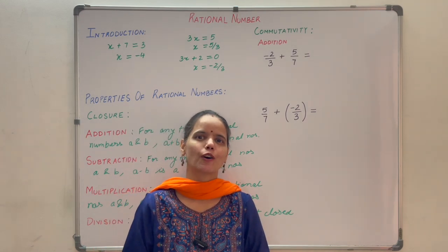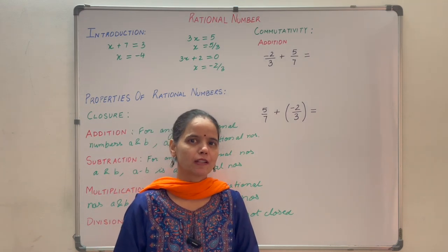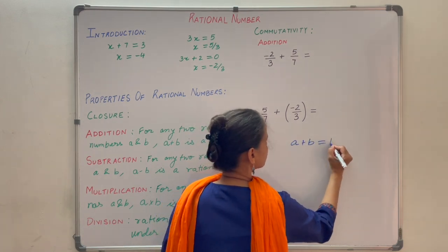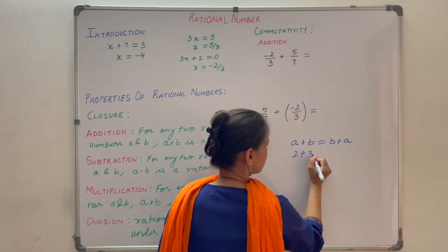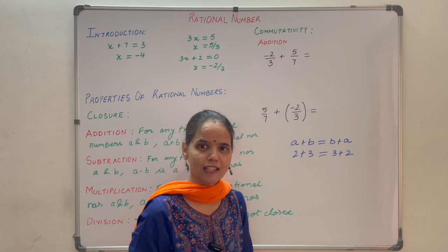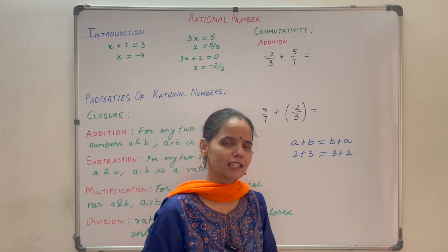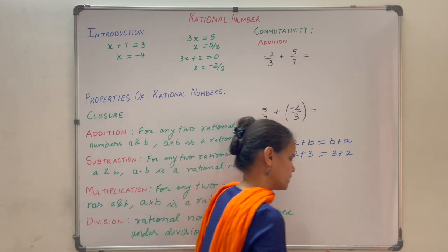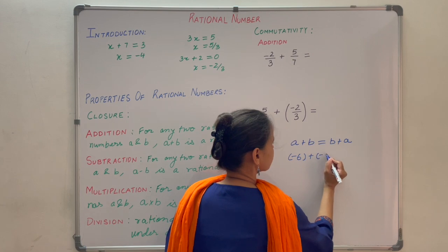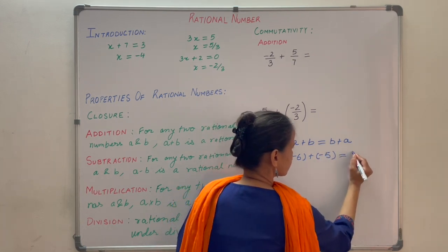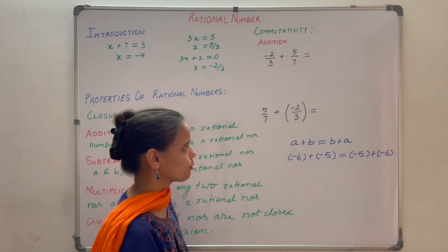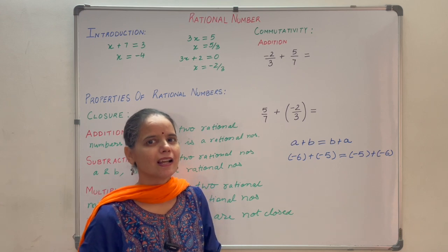Commutativity. For addition, whole numbers are commutative: for any two whole numbers a and b, a plus b equals b plus a. For example, 2 plus 3 equals 3 plus 2, both equal 5. Similarly, addition is commutative for integers. For example, minus 6 plus minus 5 equals minus 11, same as minus 5 plus minus 6.